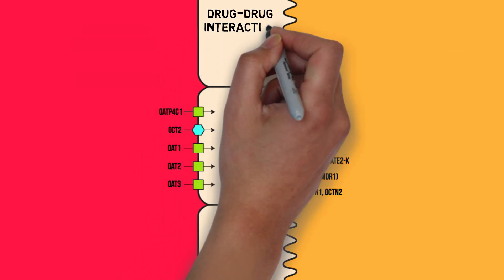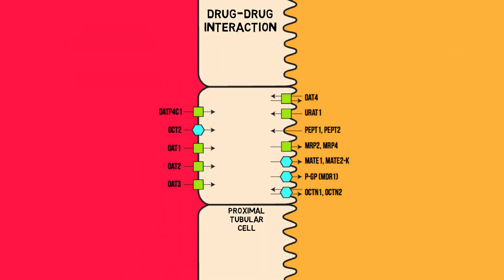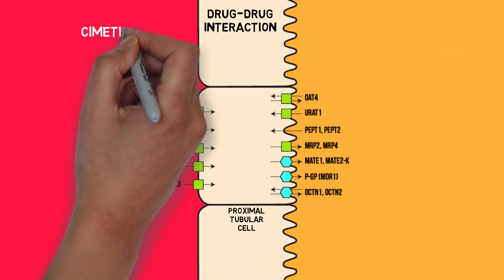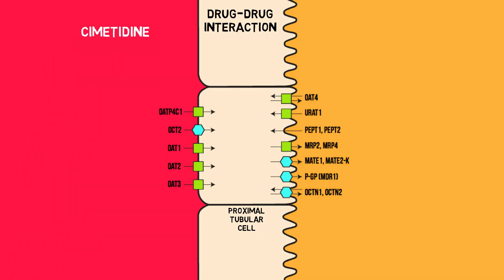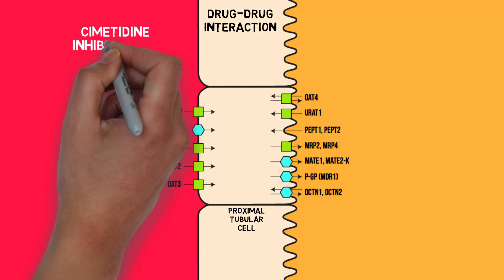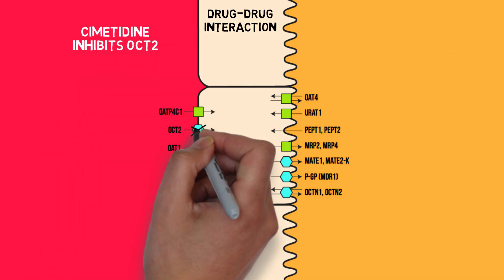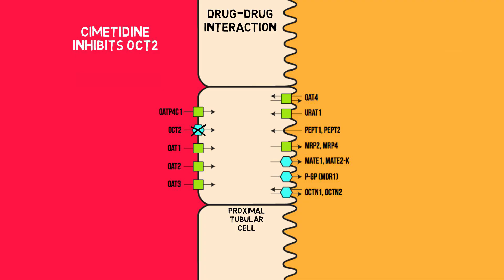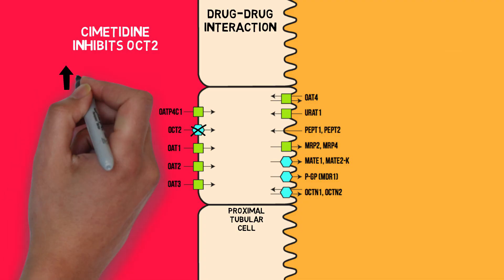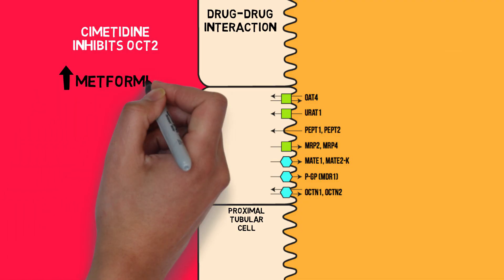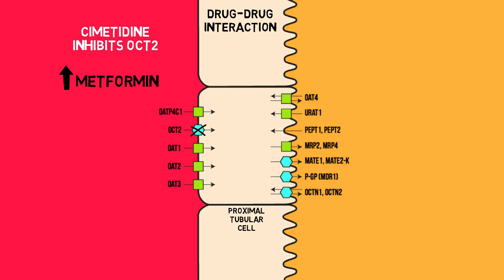These transporters can be induced, inhibited, blocked, or saturated. For example, cimetidine, an H2 receptor blocker used for ulcer treatment, inhibits the organic cation transporter, reducing tubular secretion of metformin, which could cause an increase of plasma levels of up to 40%. Fortunately there are only few clinically relevant interactions, but I'm sure more will surface in time.